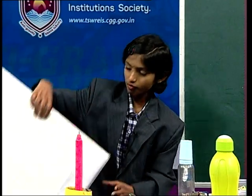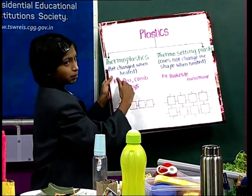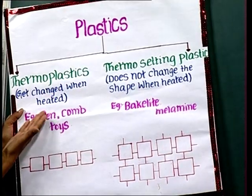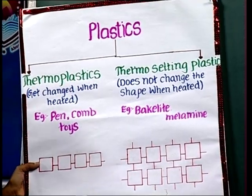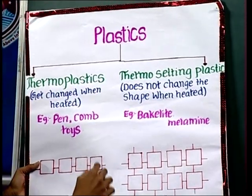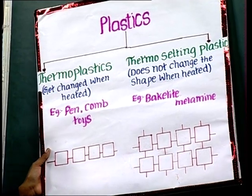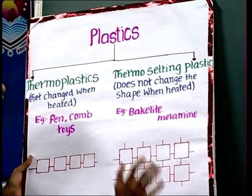Plastics are divided into two types: thermoplastic and thermosetting plastic. Thermoplastics get changed when heated — for example, pens, toys, combs. Thermosetting plastic does not change shape when heated — for example, bakelite and melamine. In thermoplastic, we have a linear arrangement of monomers, so it deforms easily. In thermosetting plastics, we have a cross-linked arrangement of monomers, so it does not deform easily when heated.